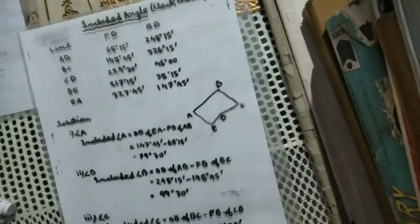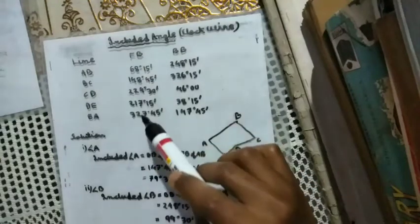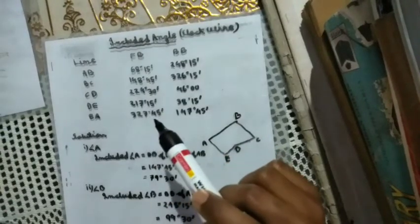As we have discussed, included angle is clockwise and anticlockwise, so we have to discuss why included angle is included. In this case, we have to do clockwise and anticlockwise.